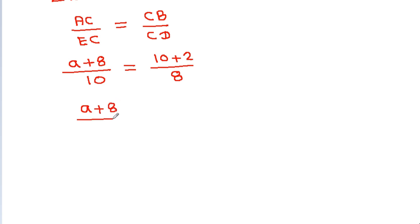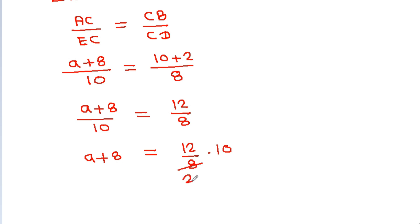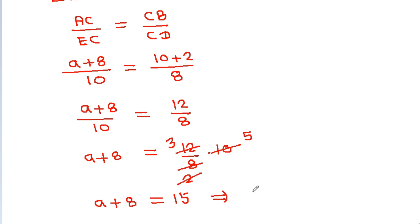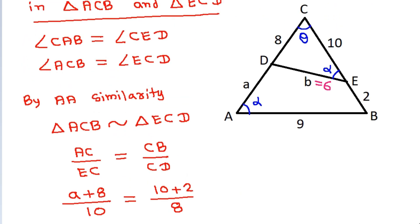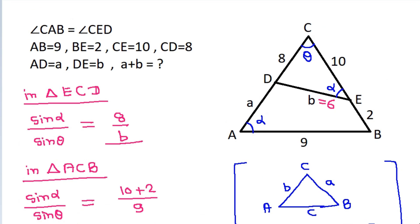And it is (A plus 8) over 10 is equal to 12 over 8. So A plus 8 will be equal to (12 over 8) times 10. Since 4 times 2 is 8, 4 times 3 is 12, and 2 times 5 is 10, A plus 8 is equal to 15. That means A is equal to 15 minus 8, which is 7. So A plus B will be 7 plus 6, that is 13.